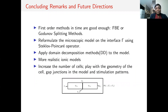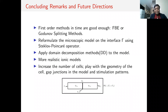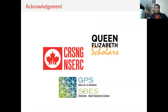In concluding remarks and future directions: first-order methods in time appear sufficient, so we can use forward Euler or Godunov splitting. In future work, we would like to reformulate the microscopic model on the interface gamma using the Steklov-Poincaré operator, apply domain decomposition methods, use more realistic ionic models beyond the Mitchell-Schaeffer two-variable model, increase the number of cells, explore different cell geometries, and include gap junctions in the model. A representation of two cells with a gap junction is shown. Thank you very much.